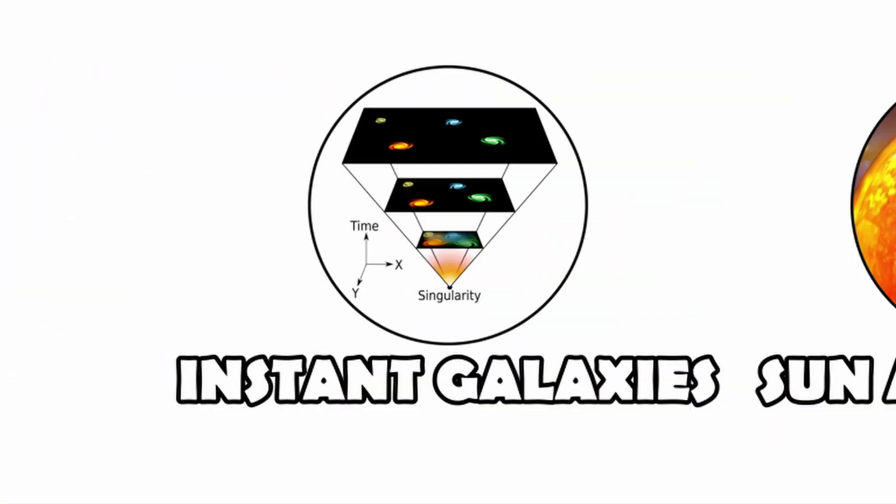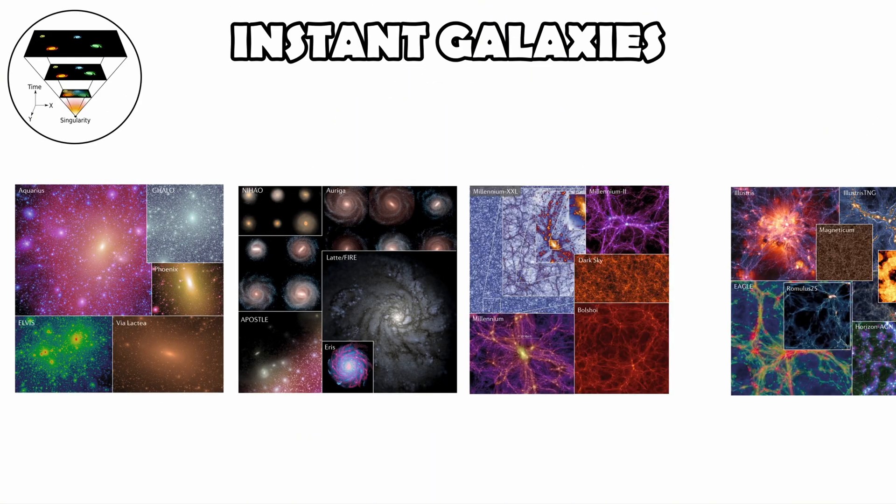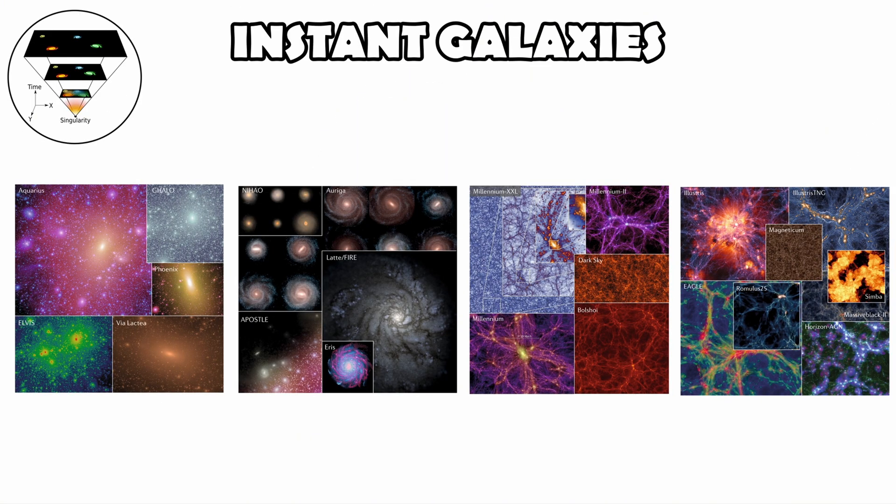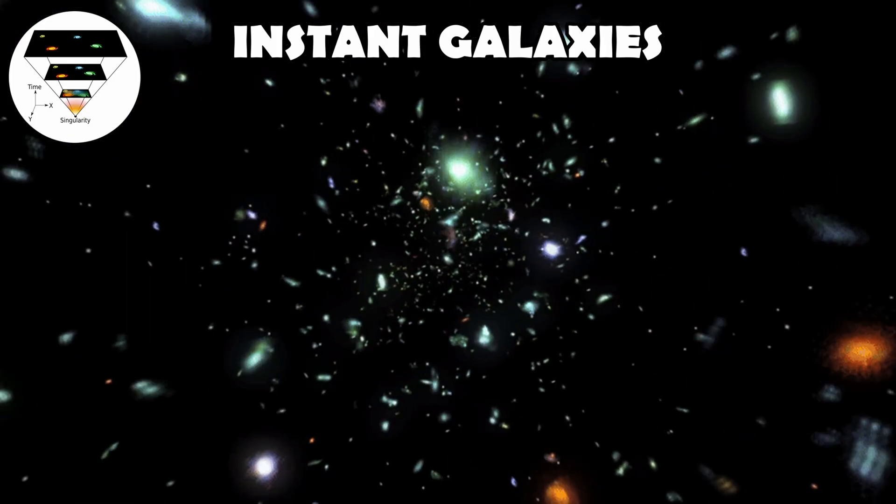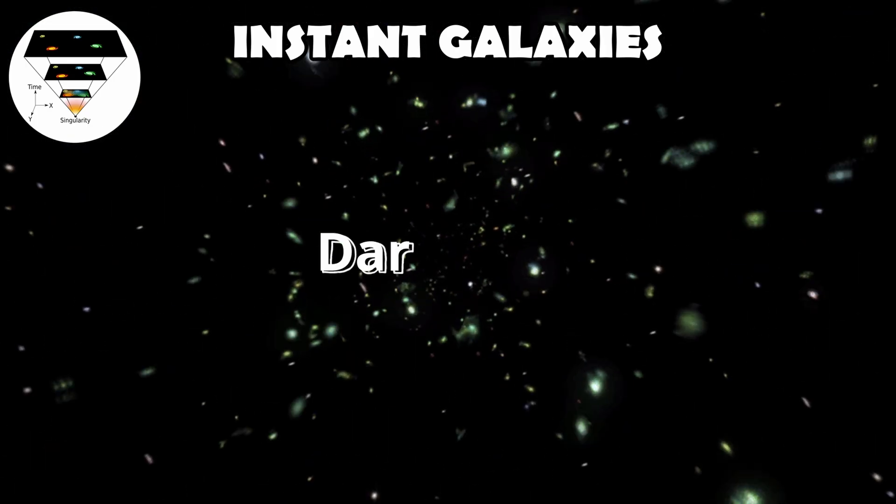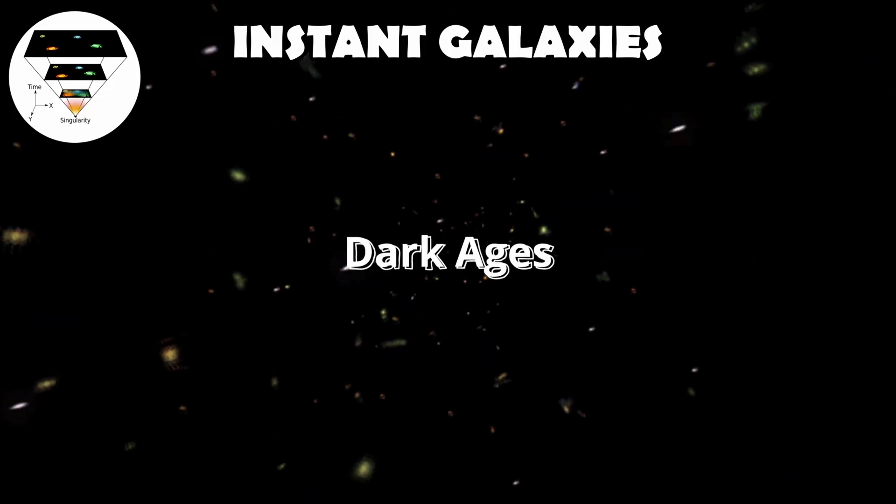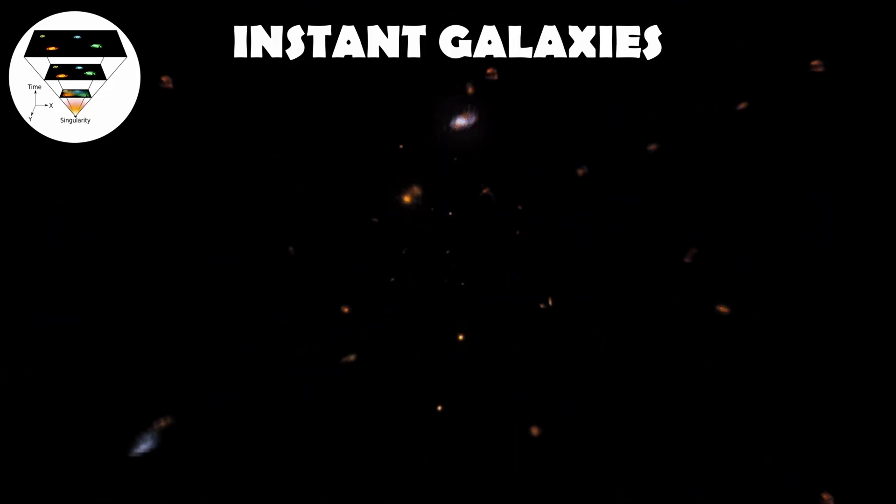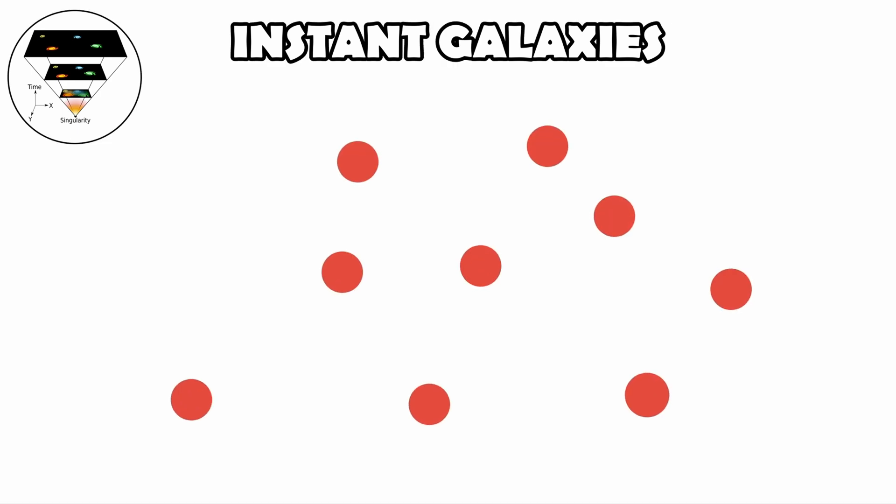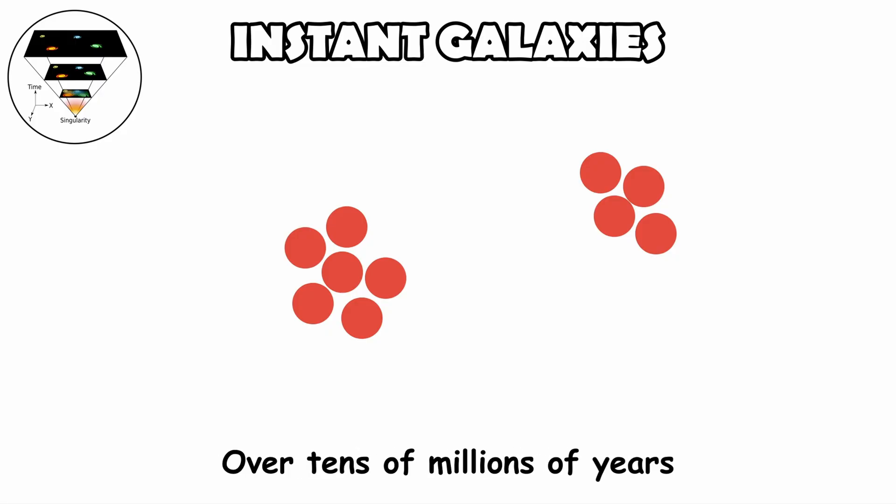Instant galaxies. A common misconception is that stars and galaxies appeared right after the Big Bang. In truth, the universe went through long dark ages before the first stars formed. After the Big Bang, the universe cooled enough for atoms to form about 380,000 years later. At this point, matter was spread thinly and evenly. Gravity then began its slow work, pulling regions of slightly higher density together. Over tens of millions of years, these clumps grew into larger structures.